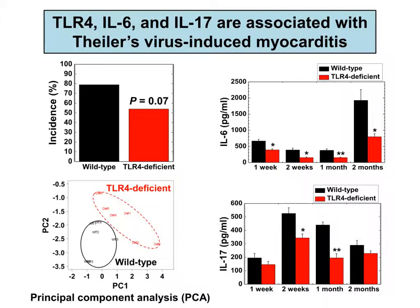Lastly, we looked at several immune molecules linked to myocarditis pathogenesis using Toll-like receptor 4-deficient mice and IL-6 and IL-17 ELISA. Toll-like receptor 4-deficient mice had a lower incidence of myocarditis than wild-type mice and also had lower IL-6 and IL-17 production. Principal component analysis (PCA) suggested that Toll-like receptor 4, IL-6, and IL-17 are associated with myocarditis susceptibility.